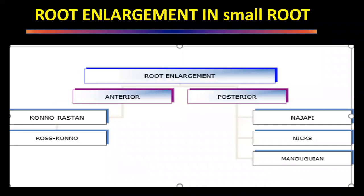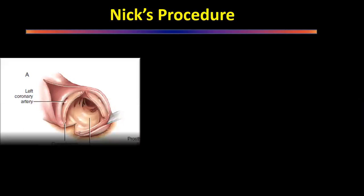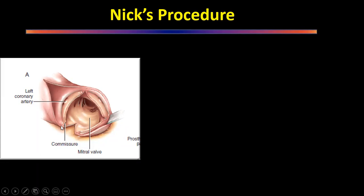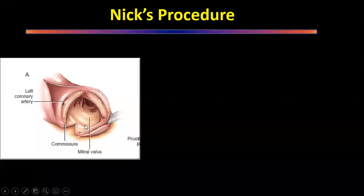Root enlargement procedures are a favourite examiner topic and must be known in detail. There are anterior and posterior root procedures. Starting with the posterior ones: the Nicks procedure — the aortotomy incision is extended between the commissure of the left and non-coronary cusps, crossing the aortic annulus into the inter-leaflet triangle but stopping short there. This creates a V-shaped defect in the aortic wall, allowing one to two millimeter larger valve size to be implanted.